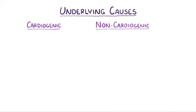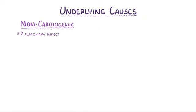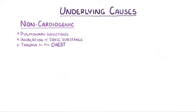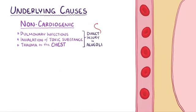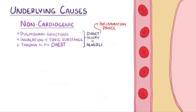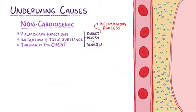Non-cardiogenic causes of pulmonary edema include things like pulmonary infections, inhalation of toxic substances, and trauma to the chest. All of these can cause direct injury to the alveoli, and when this happens there's usually an inflammatory process that makes nearby capillaries more permeable. As a result, proteins and fluid enter the interstitial space.